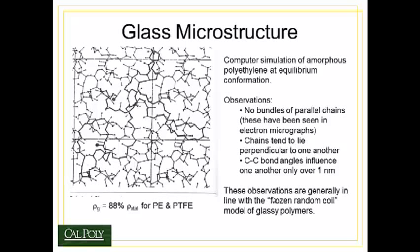Welcome to part three in topic two on polymer structures. In this part of the lecture, we're going to focus on structures of polymers in the solid state. We can generally organize solid state microstructures into glassy states and crystalline states. Let's start with the glassy states, which are typically a little bit simpler to comprehend.